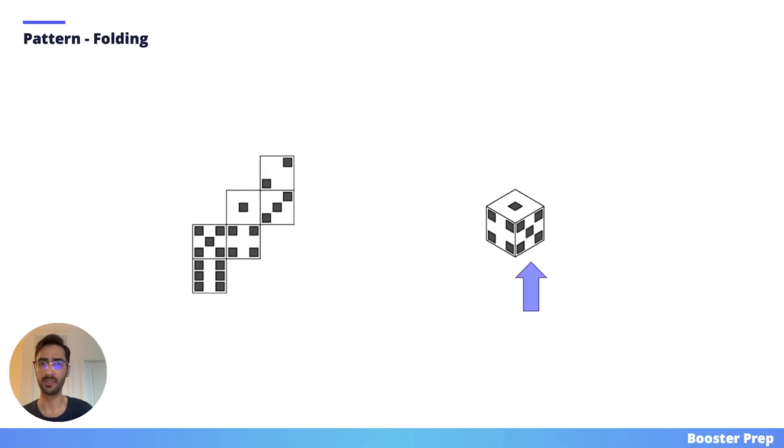Notice how on the option choice, the 5 face is directly to the right of the 4 face. If we wanted to create the same scenario with the given pattern on the left here, we would first have to rotate the pattern 180 degrees. Once we do this, the 5 face is directly to the right of the 4 face, just as it is on the option choice. Now it's clear to see that the resulting top face is clearly a 6 face as opposed to the 1 face we see on the option choice. So this option choice is incorrect.